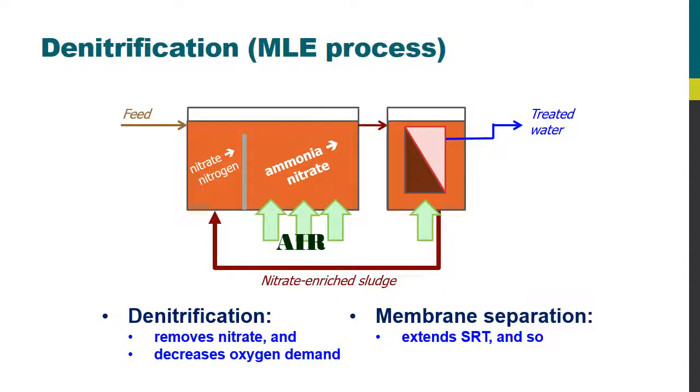But what it also does is extend the solids retention time to allow slower growing microorganisms to develop. And those microorganisms which are slow growing happen to be the nitrifiers, the things that convert ammonia to nitrate, and actually the denitrifiers as well. So you tend to get more nitrifiers developed in an MBR process than in a classical activated sludge process, such that you get rather better nitrogen removal for an MBR than you do with the classical process.